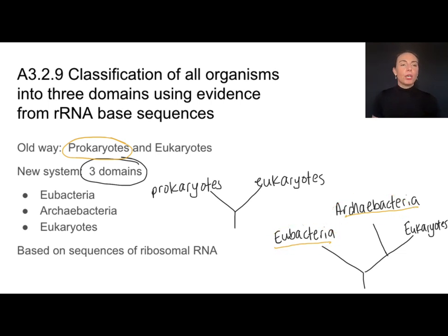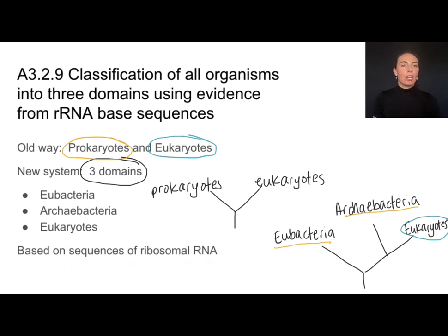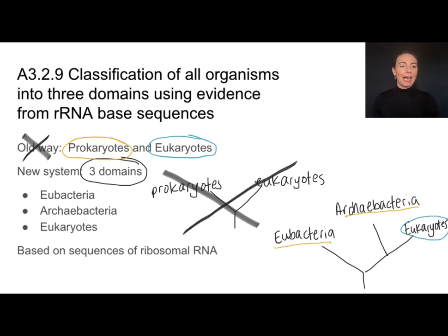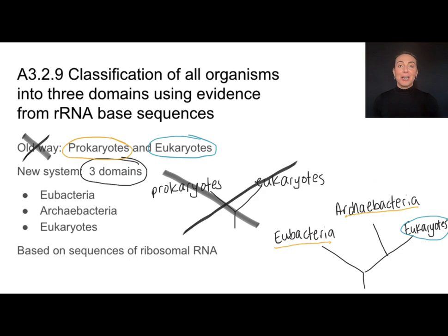So it's no longer good enough just to say prokaryotes and eukaryotes are the big domains — not so much anymore. It's all based on evolutionary origins. This is again a great example of needing to be open-minded, getting rid of old ways of thinking, and reimagining how things might have evolved from common ancestors based on genetic information.